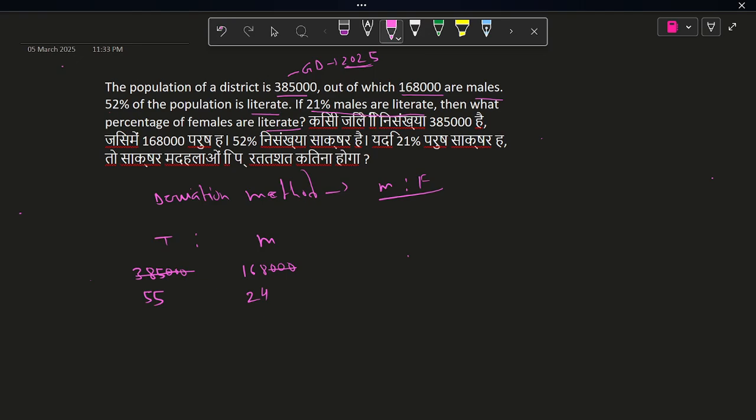So what we have to find is male is to female. So we can say male is to female will be, this is 24. So what will be the female? Female will be 55 minus 24. That is 31.